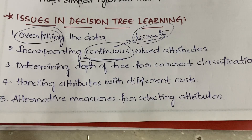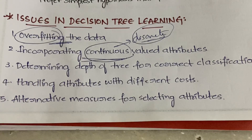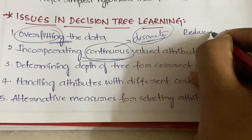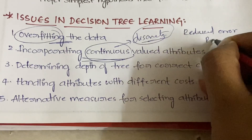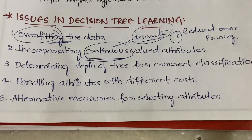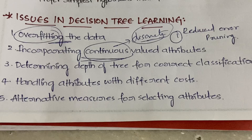To overcome the problem of overfitting, there are two solutions. The first is reduced error pruning, and the second is post rule pruning. These two are the methods to address overfitting of the data.